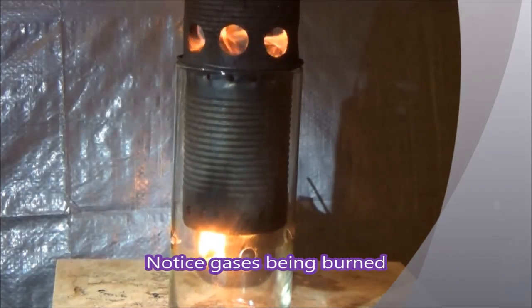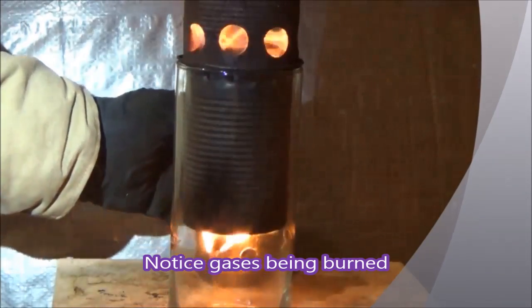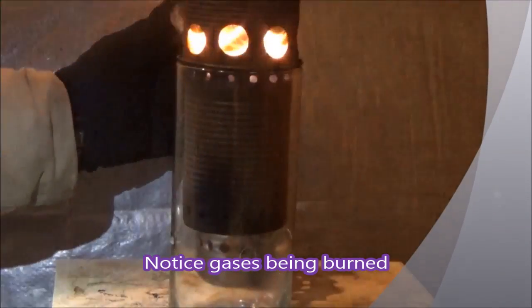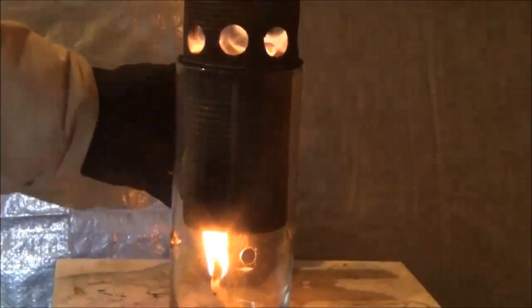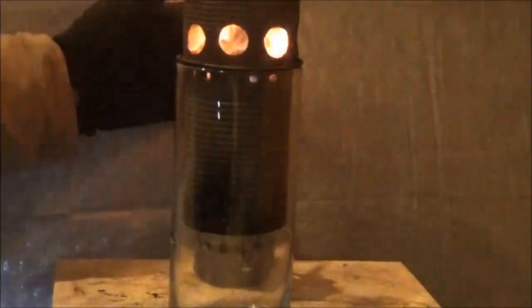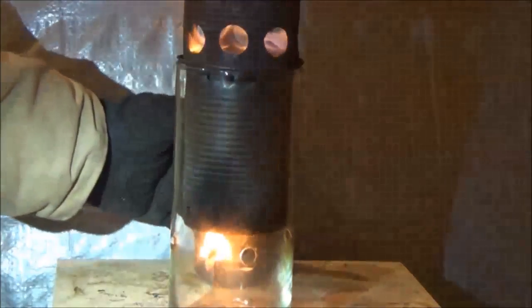Here is a great view of the gases being burned at the primary air holes and notice that when the flame is removed, how much brighter the flame at the top of the stove gets and then how much it's reduced when you introduce the flame back into the bottom.